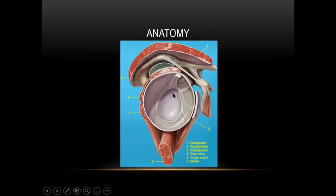Inside the joint, we have the tendon of the long head of biceps, the glenoid fossa, the superior glenohumeral ligament, middle glenohumeral ligament, anterior inferior glenohumeral ligament, and posterior inferior glenohumeral ligament. This is our capsule. We also have the acromion, coracoid process, coracoacromial ligament, clavicle, and coracoclavicular ligament. This anatomy guides us during intraoperative scoping.